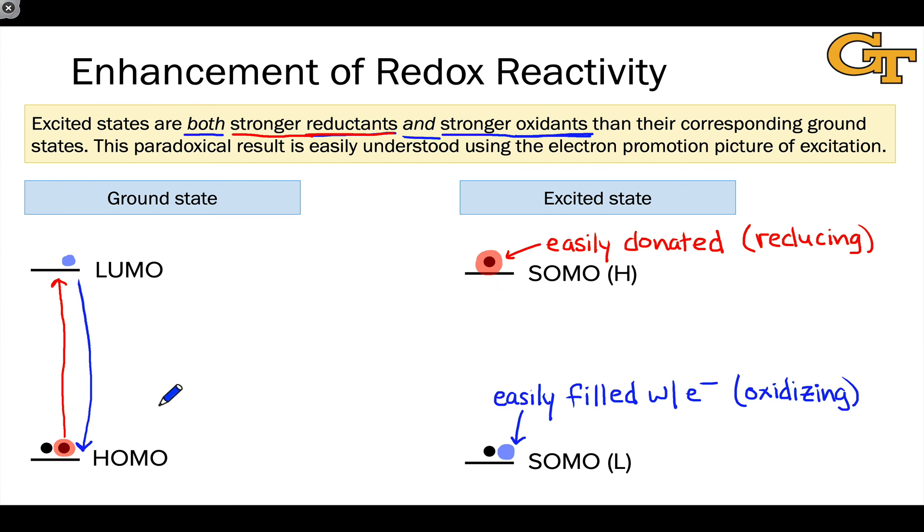Two things happen when photoexcitation occurs: an electron is promoted and a hole is demoted. Electrons are negatively charged and holes are positively charged. As a result, we get both stronger reducing power and stronger oxidizing power out of an excited state. We can quantify the amount of reducing and oxidizing power as the excitation energy—the energy required to accomplish this promotion of an electron from the HOMO to the LUMO.